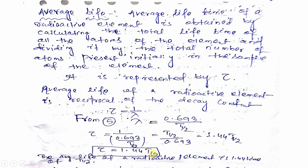This is the relation between half-life and average life period of a radioactive element. You have to remember this and solve many problems using this formula. So tau equals 1.44 T-half — the average life of a radioactive element is 1.44 times the half-life.